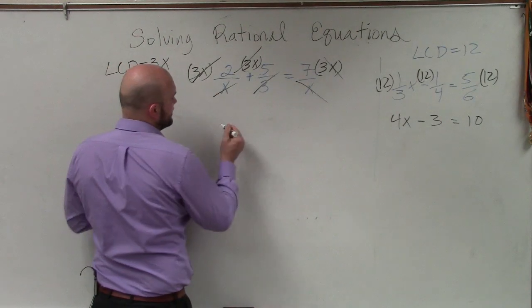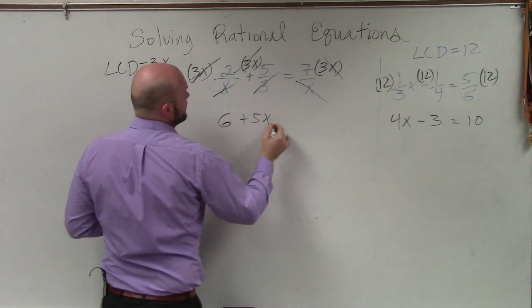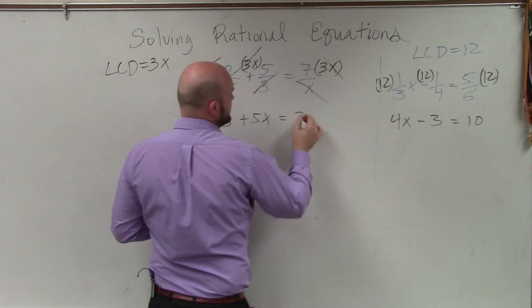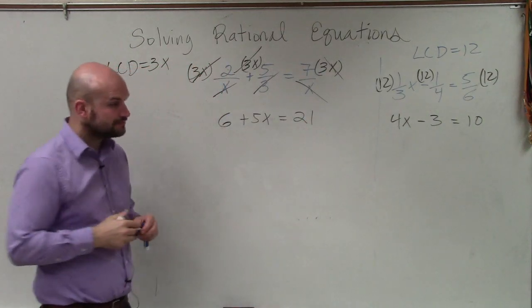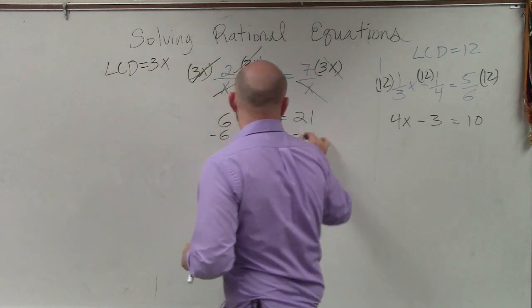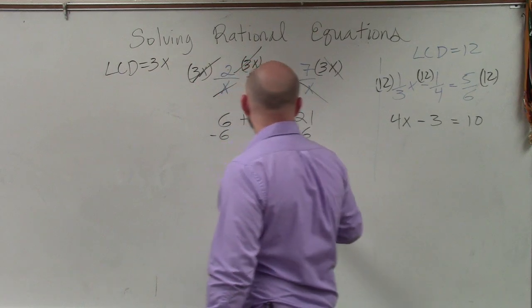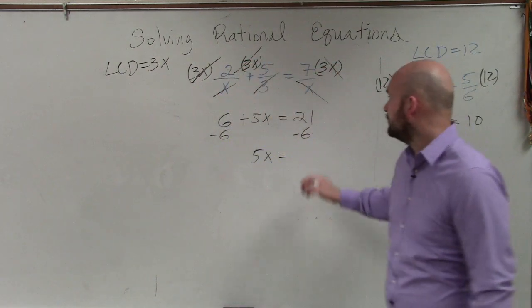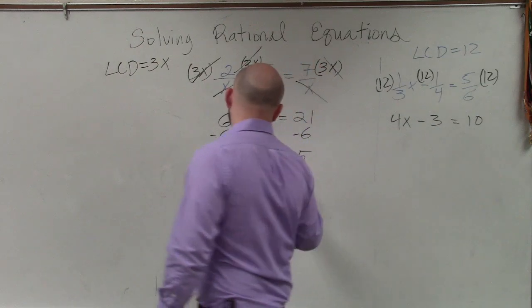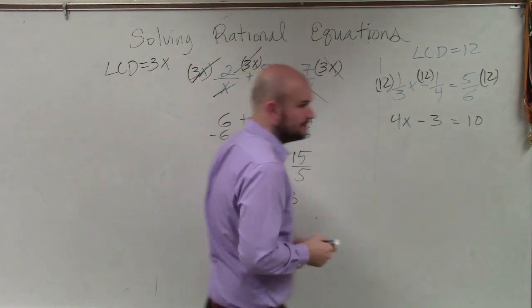So I have 3 times 2, which is going to provide me with 6. Here, I have plus 5x equals 7 times 3, which is 21. Now, I just go ahead and solve. So I subtract 6, subtract 6. So I have 5x is going to equal 15. Divide by 5, divide by 5. So I have x equals 3.